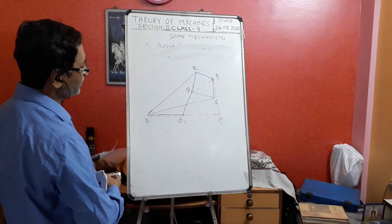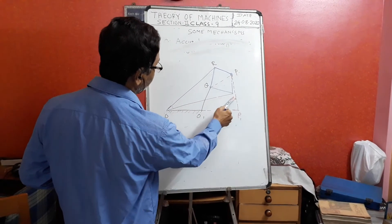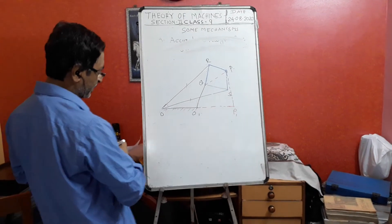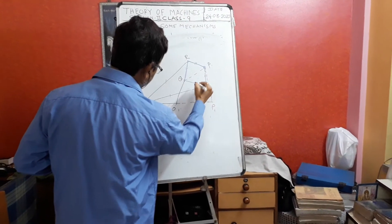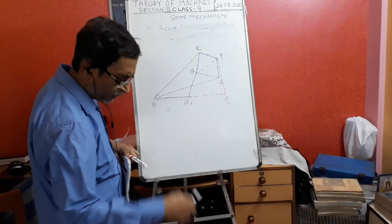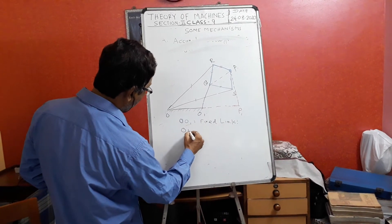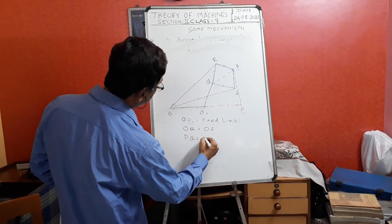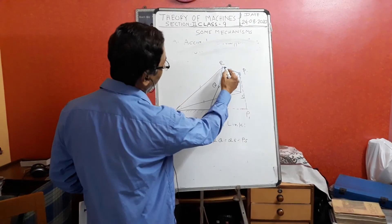The Peaucellier mechanism consists of links: O to O1 is the ground link, and OR and OS are two equal links such that OR equals OS. It also consists of four links arranged like a rhombus where all links are the same length. Specifically, PR equals RQ equals QS equals PS — all links are equal.